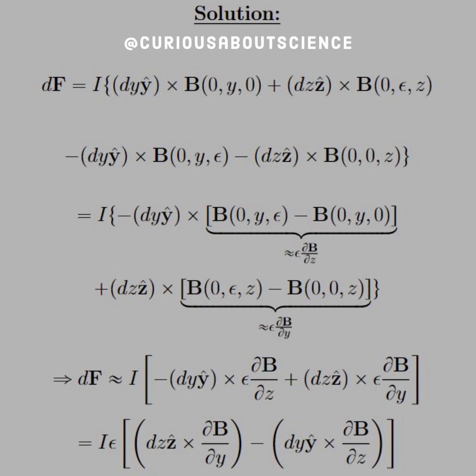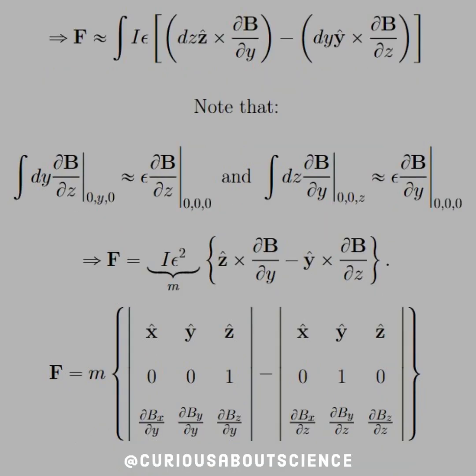And so we need to backtrack a little bit. We factor out an Iε from all of it. We put it in terms as dz ẑ cross ∂B/∂y minus dy ŷ cross ∂B/∂z so that we can fiddle with the arrangement here soon.